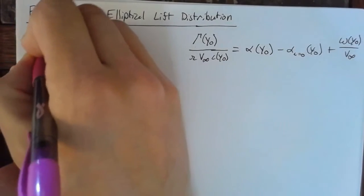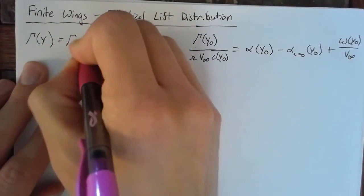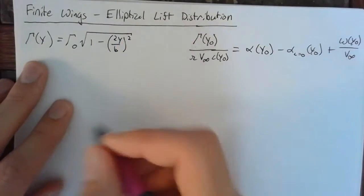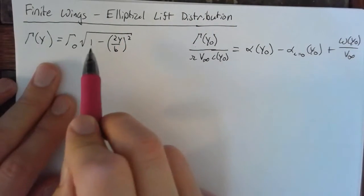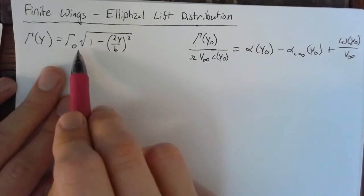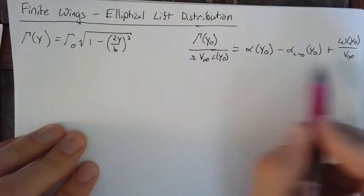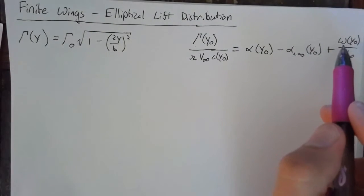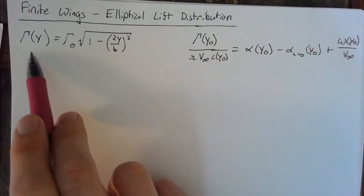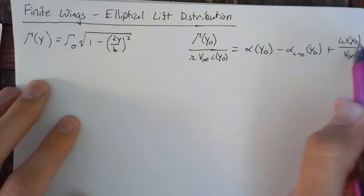An elliptical lift distribution means that we're going to have a value of gamma which is equal to gamma naught times the square root of 1 minus (2y/b) squared. This is a distribution that varies smoothly from 0 on either side at both b/2 and negative b/2, and is gamma naught in the center. The tricky part about plugging this in is that our downwash is actually dependent on our elliptical lift distribution, so we need to find the derivative of gamma.